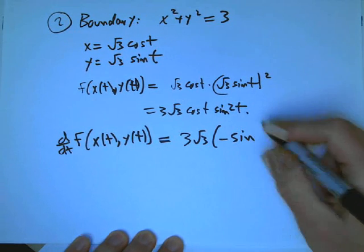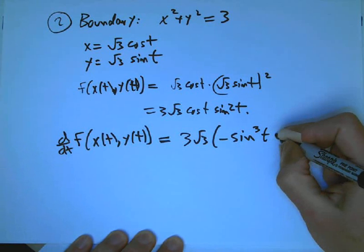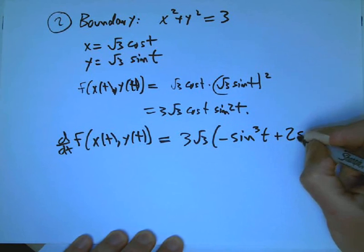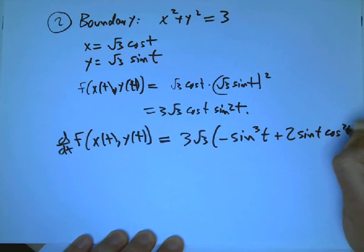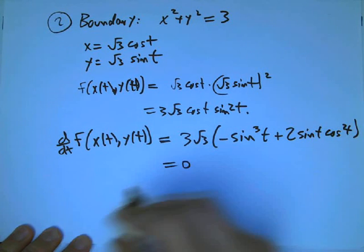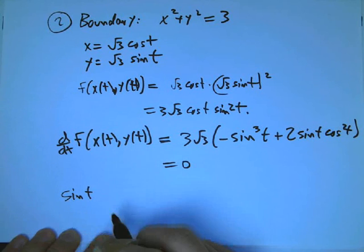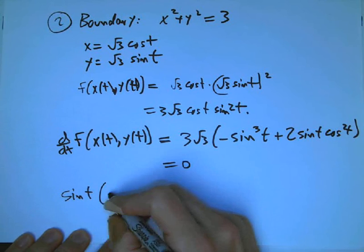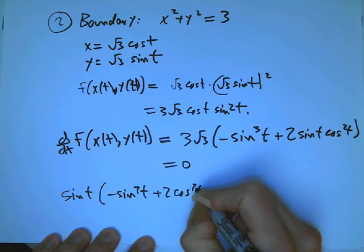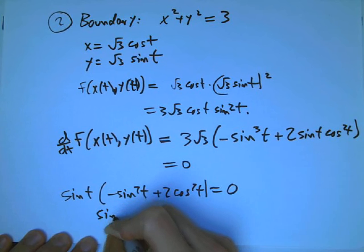So this is going to be root 3 root 3 times the quantity, product rule. Derivative of cosine is minus sine, times the existing two sines is sine cubed. And then plus derivative of sine squared is two sine cosine times the existing cosine gives you cosine squared. We're going to set that equal to zero. There's a sine t we can factor out, the three root three we can just delete. And so we get sine t times minus sine squared t plus two cosine squared t equals zero.